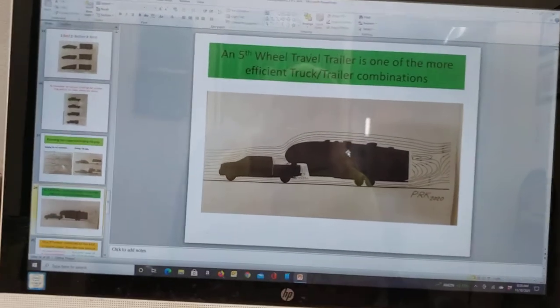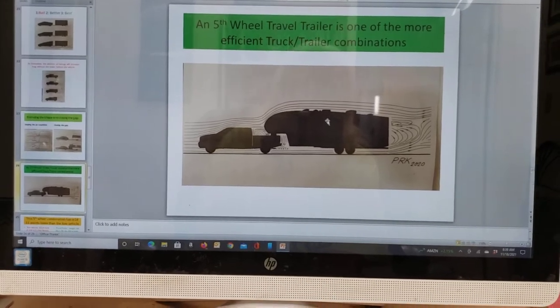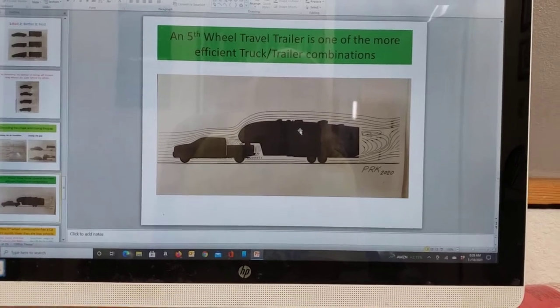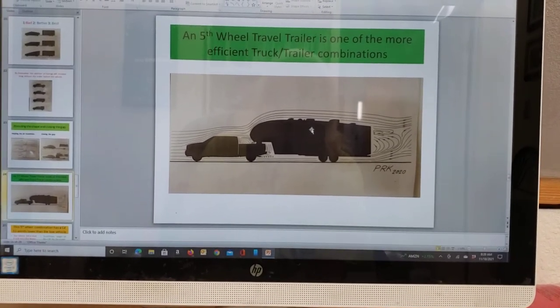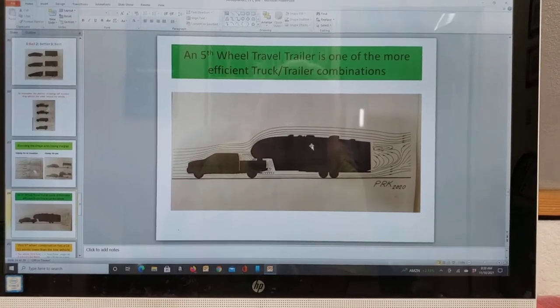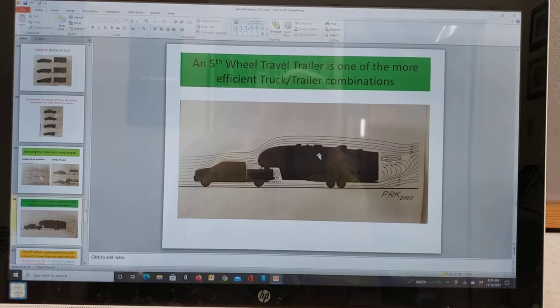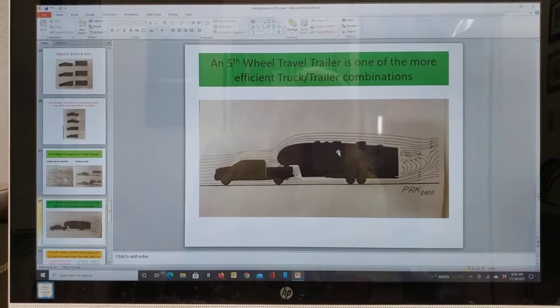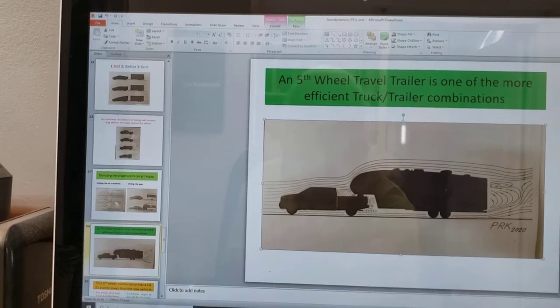Right here at slide number 24, I'm talking about my fifth wheel, which this is a silhouette of. It turns out that fifth wheels are better than most trailers because of the gap closure—the tongue of the trailer is over the rear axle. It brings the nose of the trailer closer to the cab and it closes this gap right in here.